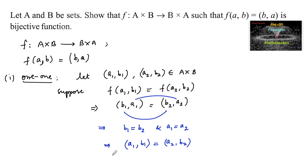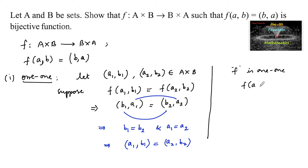Hence we can confirm that when two images are the same, as per the definition of one-to-one — f is said to be one-to-one if f(a) equals f(b) implies a equals b for (a, b) belonging to the domain — since f of (a1, b1) equals f of (a2, b2) implies (a1, b1) equals (a2, b2), we can say f is a one-to-one function.